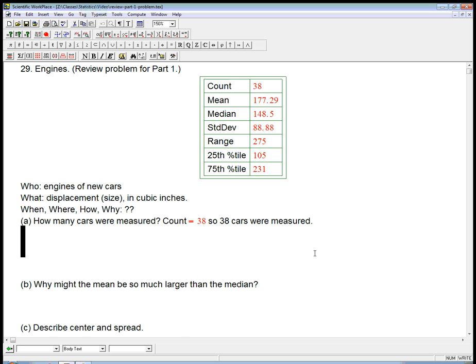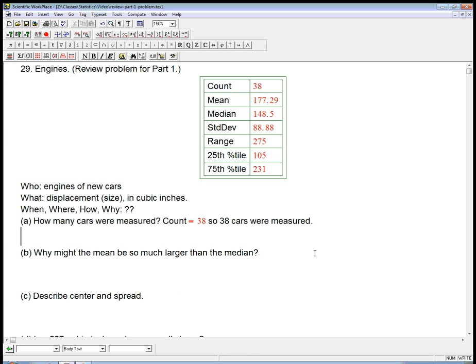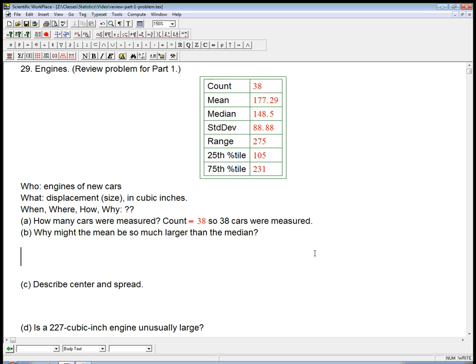Why might the mean be so much larger than the median? They're already asking us a why question here. And we look at it and say, yeah, actually, the mean is rather larger than the median. So that's definitely an indication of something. The most important indicator is that the distribution can't be symmetric. It can't be really close to being symmetric and have the mean and the median be very different. It's not symmetric.